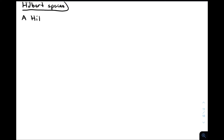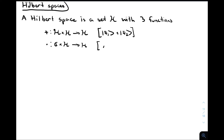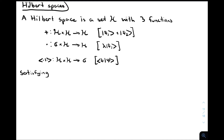We'll start by overviewing what a Hilbert space is. In quantum mechanics, the state space is described by a Hilbert space. A Hilbert space is a set with three functions. In this function notation, after the colon is the domain — the set whose elements are fed into the function — and to the right of the arrow is the codomain, the target space. So you can think of addition, scalar multiplication, and the inner product as functions.